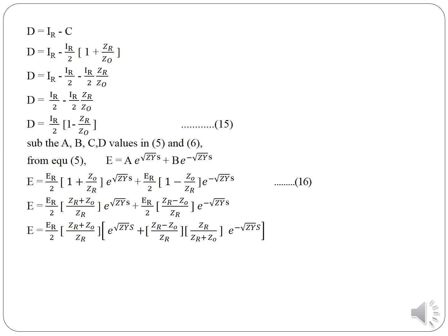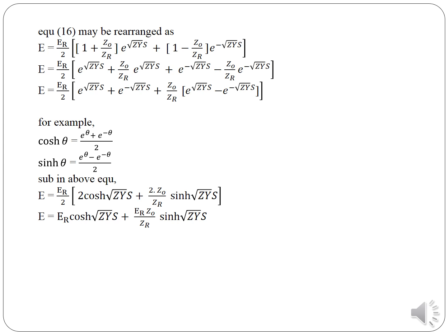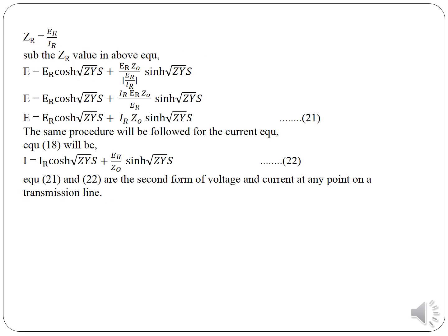Substituting the final values of A, B, C, and D, the voltage equation becomes E = (ER/2) · [(ZR + Z₀)/ZR · e^(√ZY·S) + (ZR/Z₀) · e^(−√ZY·S)]. This simplifies to E = ER·cosh(√ZY·S) + IR·Z₀·sinh(√ZY·S), and the current is I = IR·cosh(√ZY·S) + (ER/Z₀)·sinh(√ZY·S). These are the voltage and current equations at any point on the transmission line.